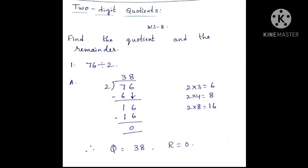Good morning children. Today I want to explain two-digit quotient. Worksheet number 8 from Class 3, Chapter 5. Find the quotient and the remainder.